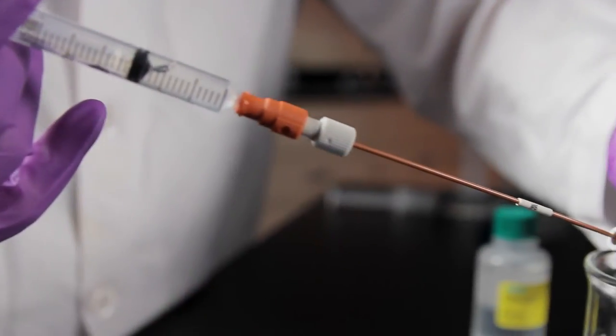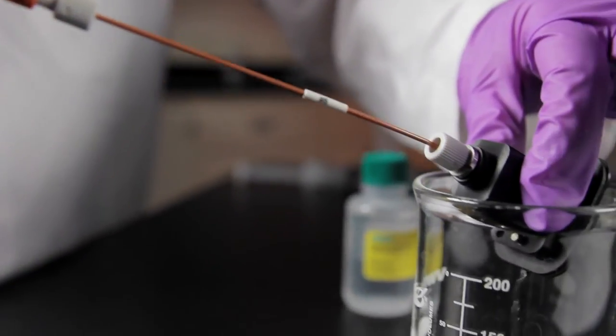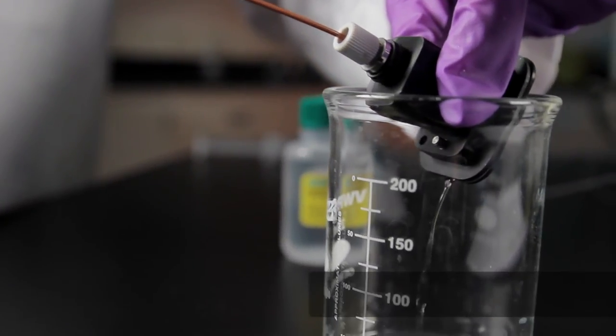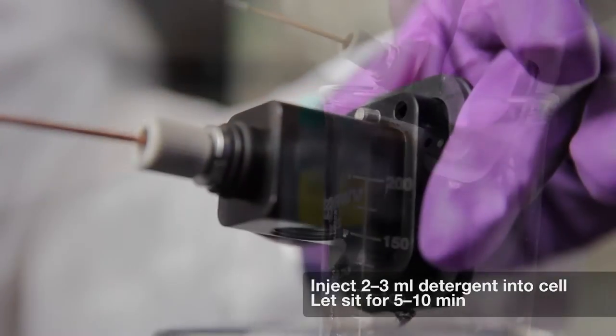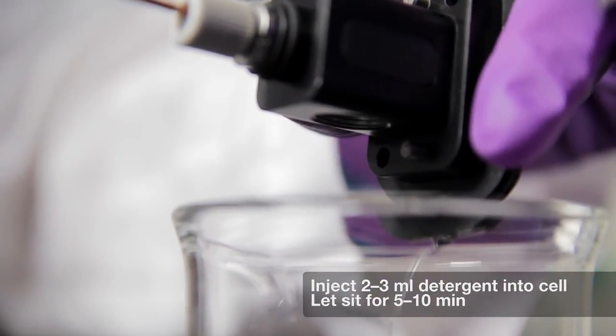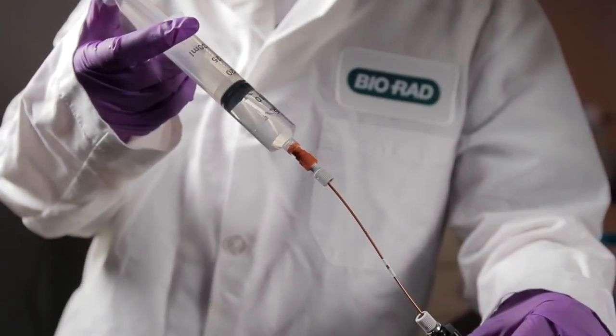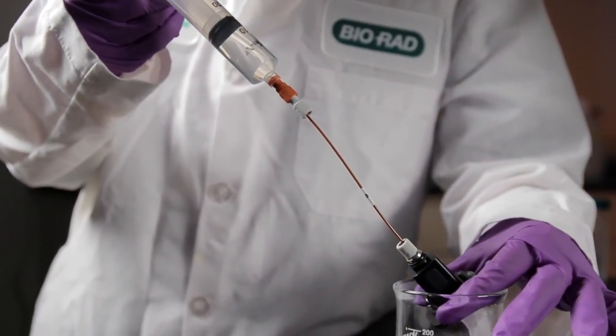Using a syringe attached to tubing, inject 2-3 mLs of the detergent into the flow cell and let it sit for 5-10 minutes. Then flush rapidly with 10-20 mLs of water.